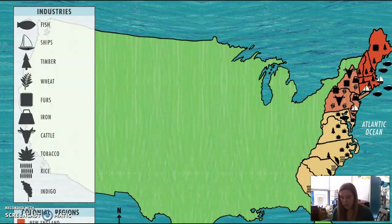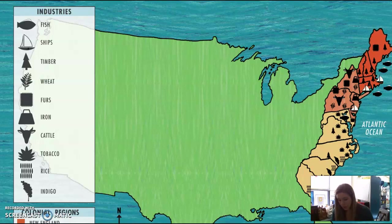As the 13 English colonies began to take shape, they were naturally divided into three distinct regions: the New England, Mid-Atlantic, and Southern regions. These regions were different from each other in many ways. For example, in New England, because of the colder climate, rocky terrain, and poor soil, it was difficult for the colonists to farm many crops. Instead, New England became known as a center for fishing, furs, timber, and shipbuilding.